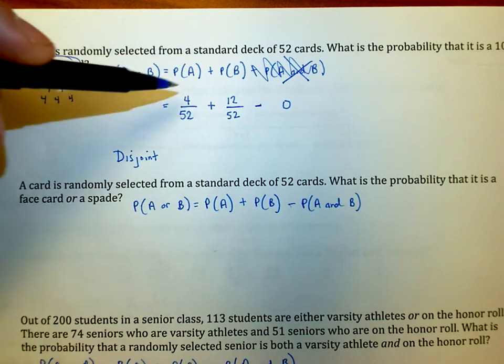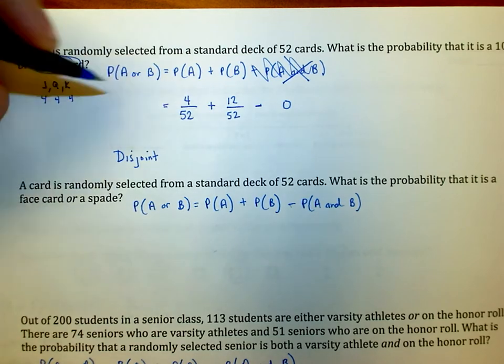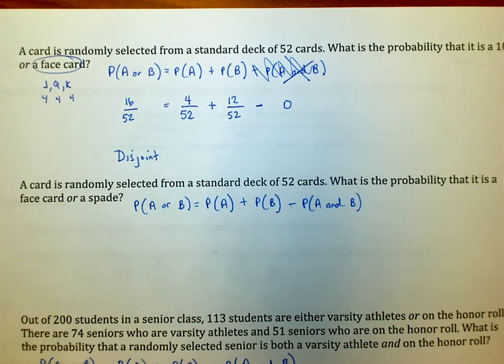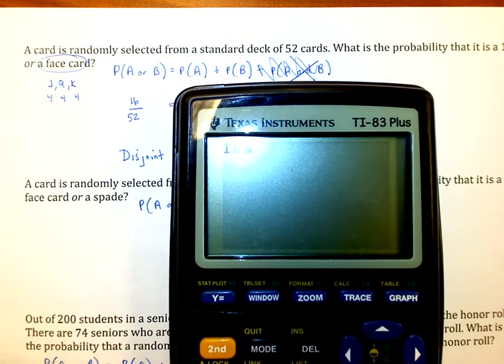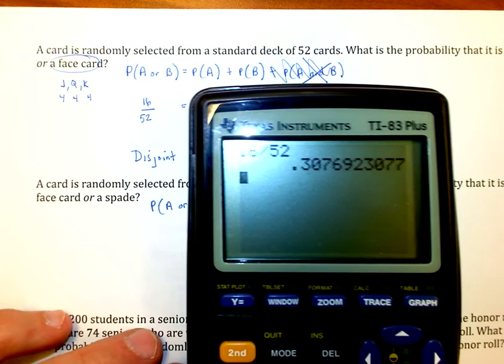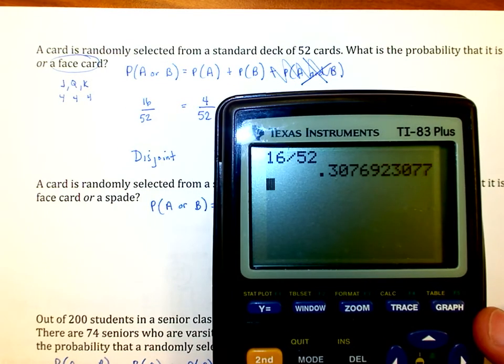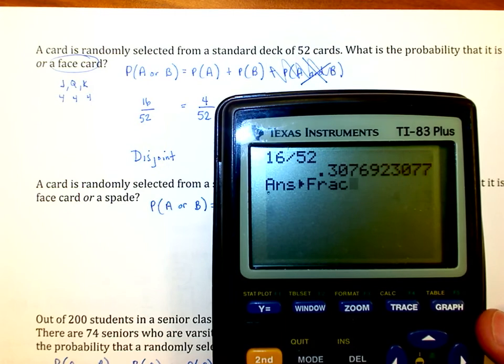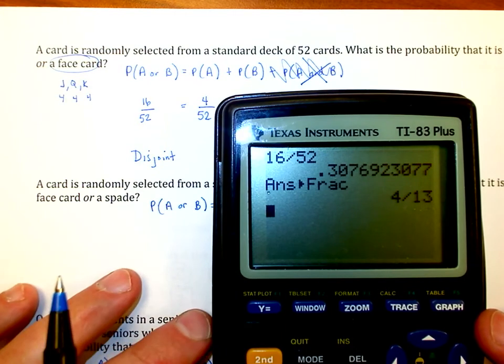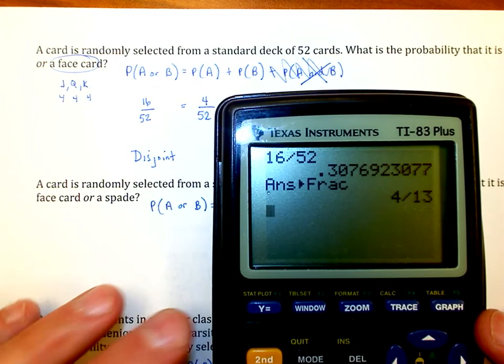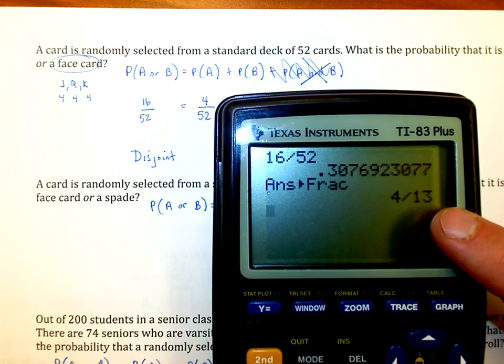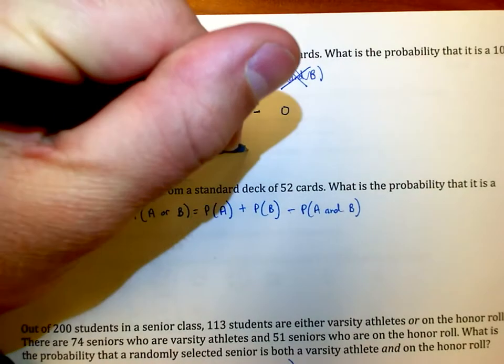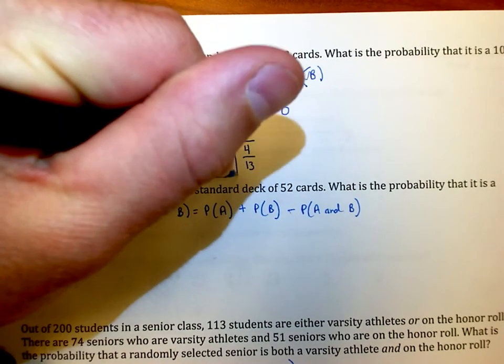Now we see that I'm going to take 4 over 52 and 12 over 52, add them together, that gives me 16 over 52. Now I go on my calculator and say, what is 16 over 52? I divide it and turn it into a fraction, it's 4 thirteenths. Four out of every 13 cards is either a 10 or a face card. Of course, in each suit and every 13 cards in one suit, there's a 10, jack, queen, and king. The answer in this case would be 4 thirteenths.